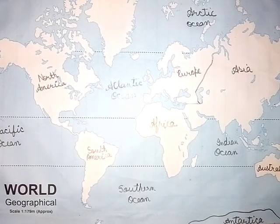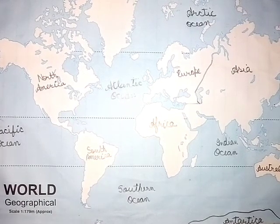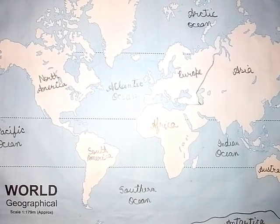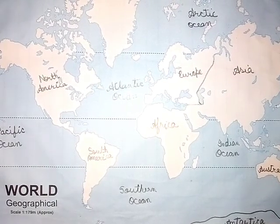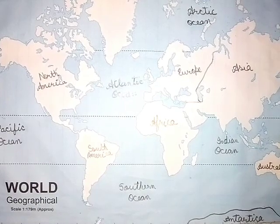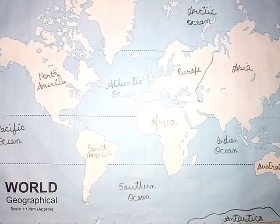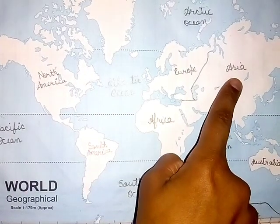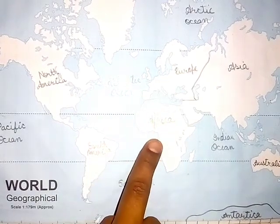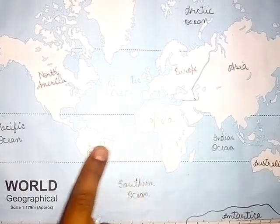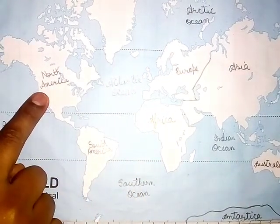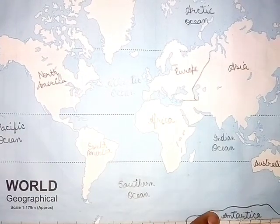Friends, there are major 7 continents and 5 oceans on earth. The 7 continents located on earth are Asia, Europe, Africa, South America, North America and Antarctica.